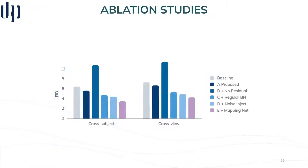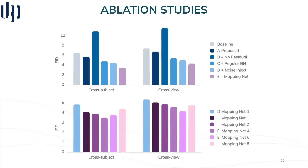We performed several ablations, where we validated different network designs to justify the selected components such as residual functions, regularized batch normalization, noise injection, and the mapping network. We further studied the importance and depth of the mapping network, finding that when there is a greater number of different people, a deeper network is more optimal in order to represent a more complex latent space.